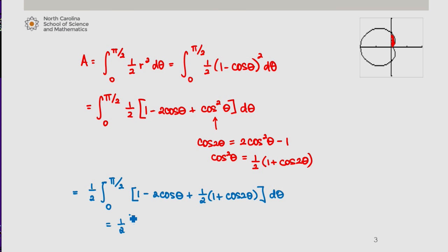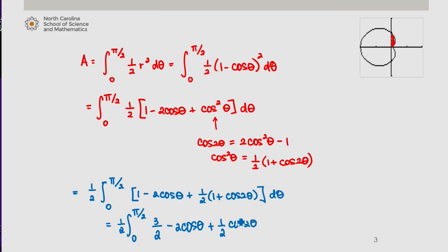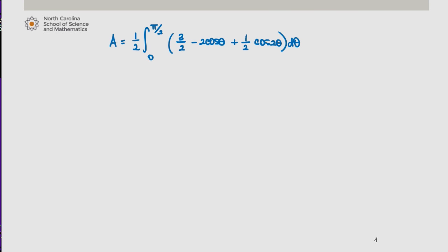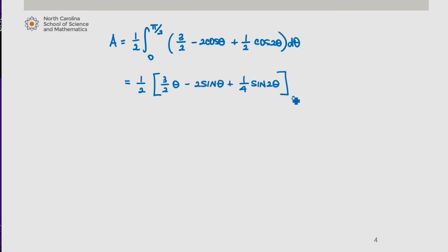This gives me one half times the integral from 0 to pi over 2 of — combining the one half with 1 — three halves minus 2 cosine theta plus one half cosine of 2 theta. We integrate to get three halves theta minus 2 sine theta plus one fourth sine of 2 theta, evaluated from 0 to pi over 2.